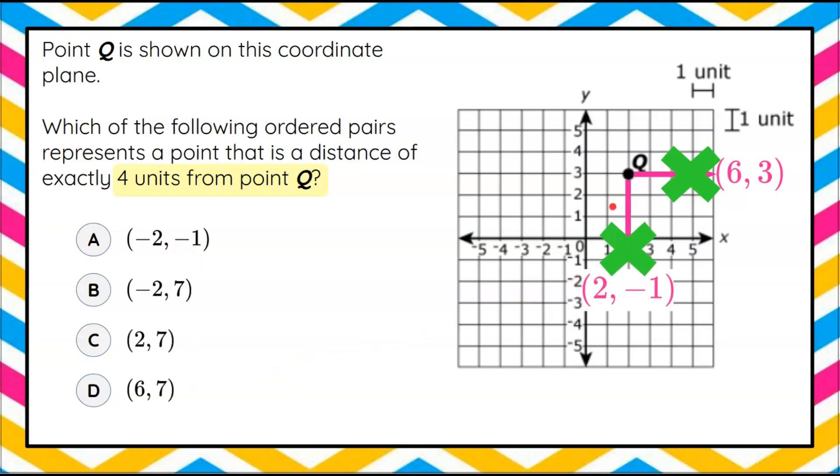Let's go four units to the left. One, two, three, four brings me to negative two and up three, ordered pair negative two, three, is four units from point Q. Looking here, there's no negative two, three, so it's not four units left.